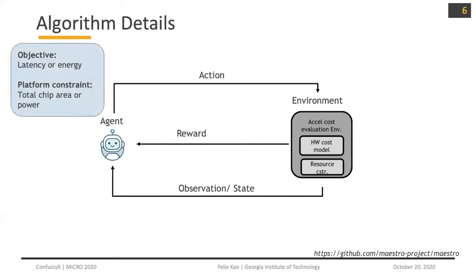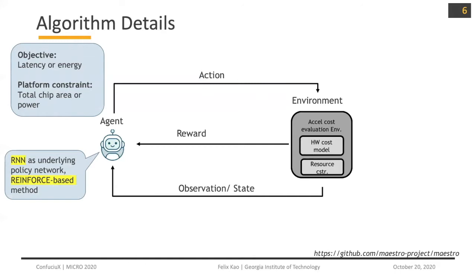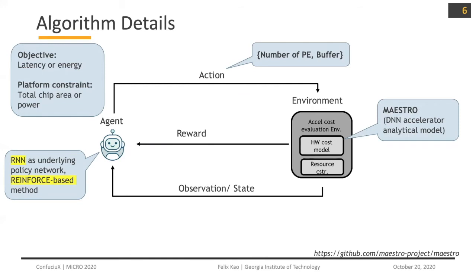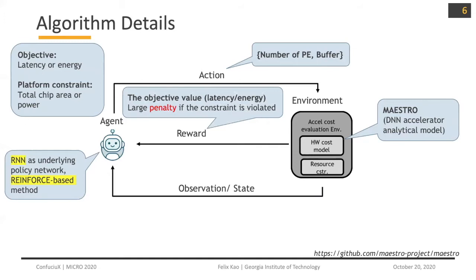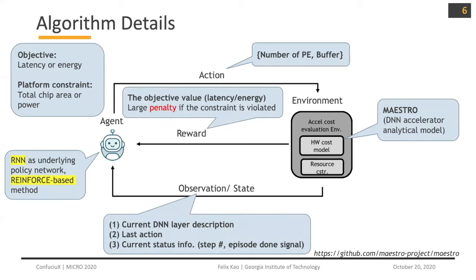Here are some details. Our objective could be latency or energy, and the constraint will be the total chip area or power. Inside the agent, we use RNN as an underlying policy network and a REINFORCE-based method. An action will be the number of PE and buffer. In the environment, we embed Maestro, which is an analytical model for DNN accelerators. The reward is the objective value like latency or energy, and sometimes you will get a large penalty if the constraint is violated. The observation includes the current DNN layer, the previous action made, and the current status like the number of steps and whether the episode is done.